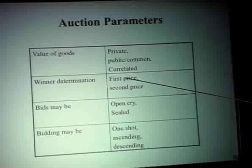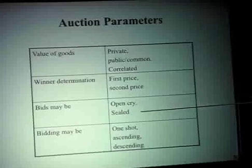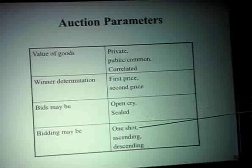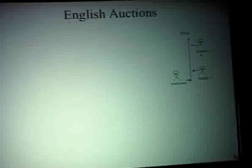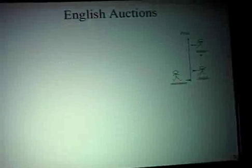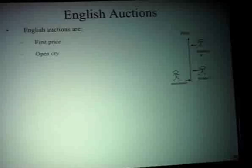In more general terms, all auction parameters can be characterized as follows: value of goods is private, public, or correlated; winner determination is first-price or second-price; how bids happen is open cry or sealed; and how many bids can be done — one-shot, ascending, or descending. Depending on these parameters, we have different protocols. When we think about auctions, most of us think about what is called the English auction: first price, open cry, ascending. The auctioneer begins with the lowest acceptable price and bidders successively raise bids until a single bidder remains.